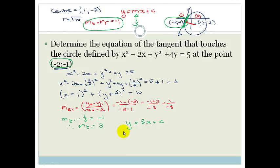So let's do that. We've got minus 1 is equal to 3 times minus 2 plus c. So that's minus 1 is equal to minus 6 plus c. So c is going to be 5, because you take it across and it becomes plus 6. Therefore, the equation for this tangent is y is equal to 3x plus 5.